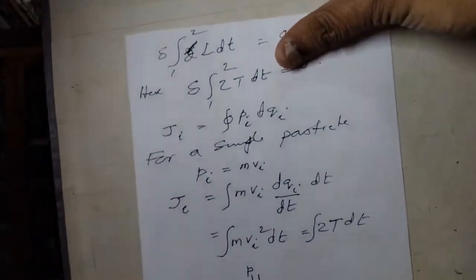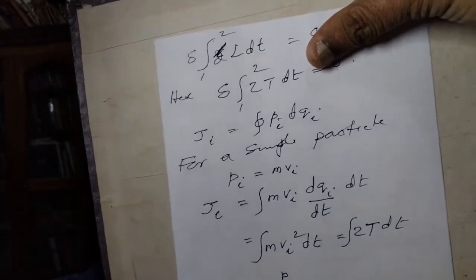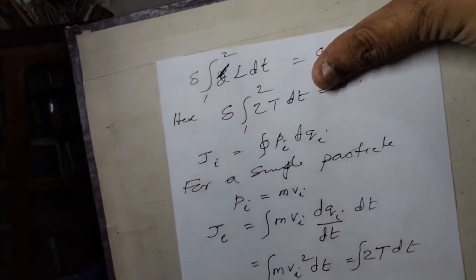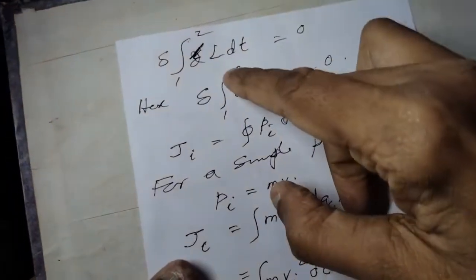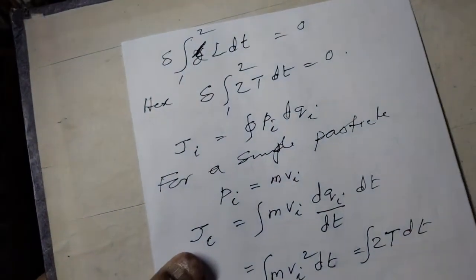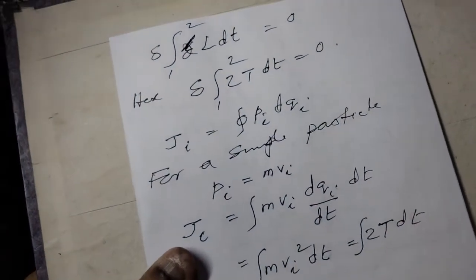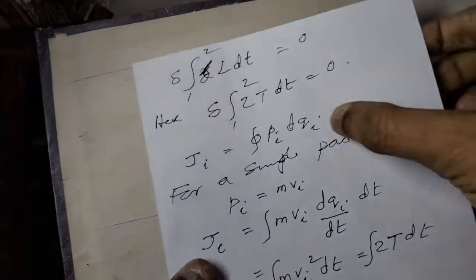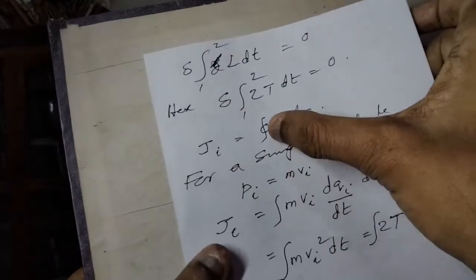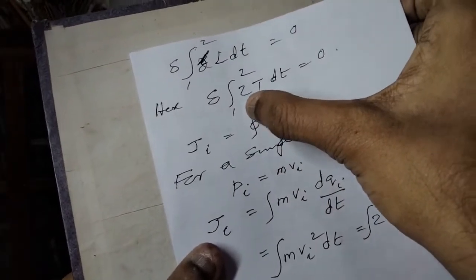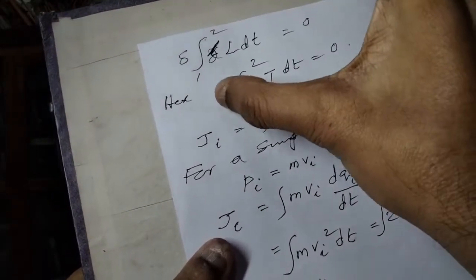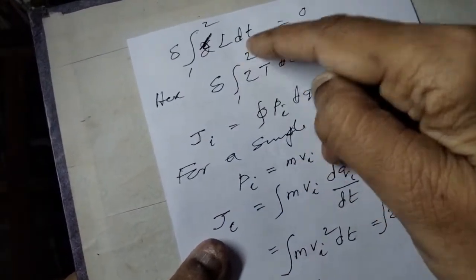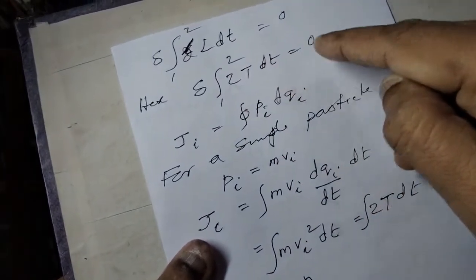The action integral: integral from initial state to final state of L dt equals zero. This is Hamilton's Principle of Least Action, even for a conservative system. Hamilton's Principle: delta of the integral from 1 to 2 of 2T dt equals zero.